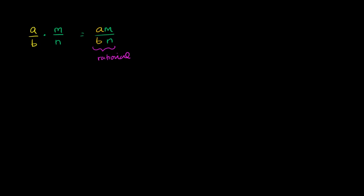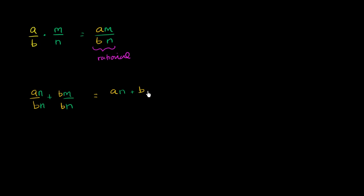Let's see if the same thing is true for the sum of two rational numbers. So my first rational number can be represented as a over b, and my second rational number can be represented as m over n. Well, how would I add these two? I can find a common denominator, and the easiest one is b times n. So I multiply the first fraction by n in the numerator and n in the denominator, and the second by b in the numerator and b in the denominator. Now they have a common denominator of bn, and this is going to be equal to an plus bm,